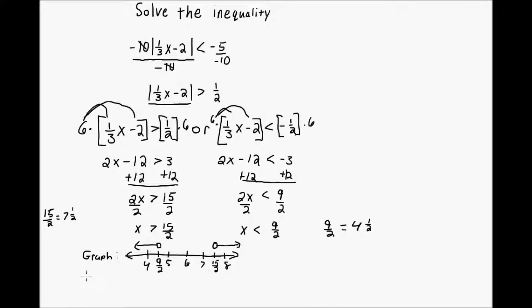Okay, now I need my set builder notation. I'm going to write curly braces. X such that x is less than 9 over 2. Or, and then there's a gap here. And that reminds me that I need to write or because of this gap. X is greater than 15 over 2. And then close the curly braces.